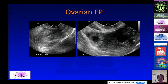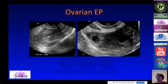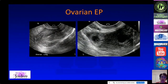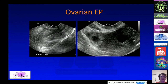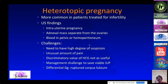Ovarian ectopic pregnancy is incredibly rare — this is the only case the speaker has ever seen. A mass in the ovary is almost always going to be a corpus luteum, not an ectopic pregnancy. This lesion was intimately related to the ovary and contained a yolk sac, making it the one exception encountered.